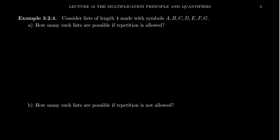Let's look at another example. Consider lists of length four made with the symbols A, B, C, D, E, F, G. This is very important: lists are ordered, not sets — the order matters. In the previous examples, the alphabets were different for each decision, so if you mixed up the order it didn't matter. Same with the code words — a Roman letter then a digit. But now we need to consider lists where the order of letters matters.